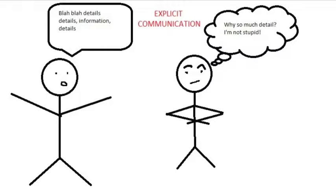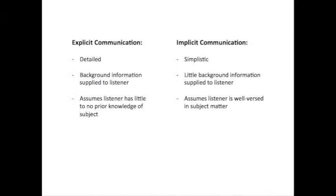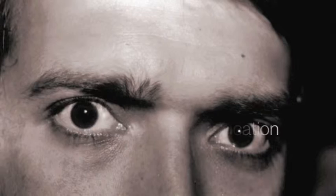On the other hand, an implicit communicator assumes that the listener is already fully aware of the subject and relays information accordingly. Thus, an explicit communicator may find implicit communication confusing or vague, while an implicit communicator may find explicit communication overly comprehensive.